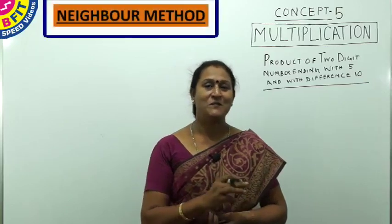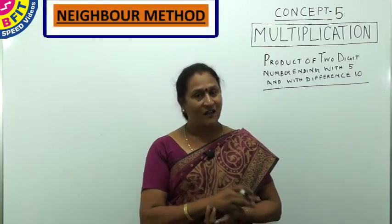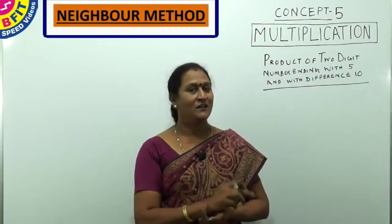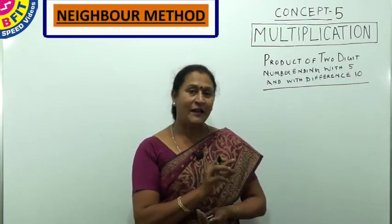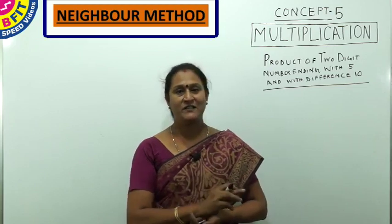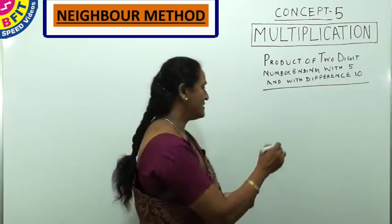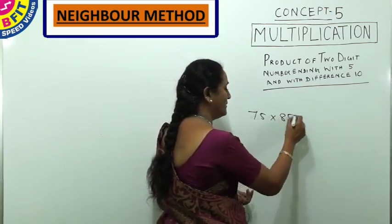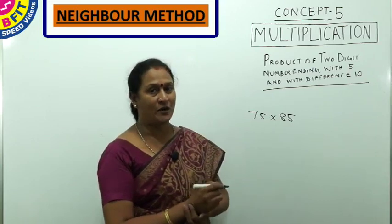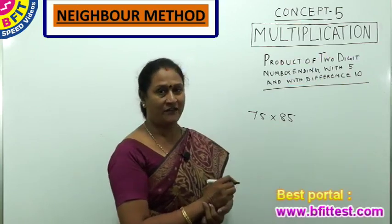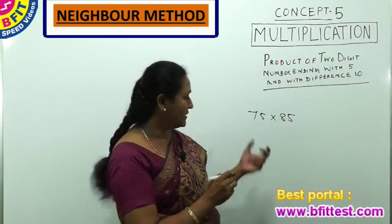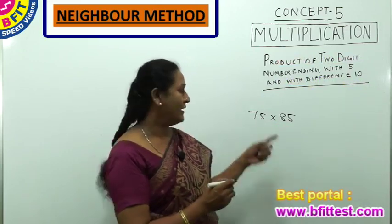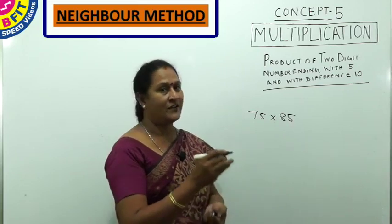We will see the product of some special numbers where you can get the answer as soon as you see the numbers. The concept here is numbers ending with 5 and difference is 10. Say the numbers are 75 and 85 — without multiplying, seeing the numbers we can say the answer because it has a pattern: ending with 5 and difference is 10.